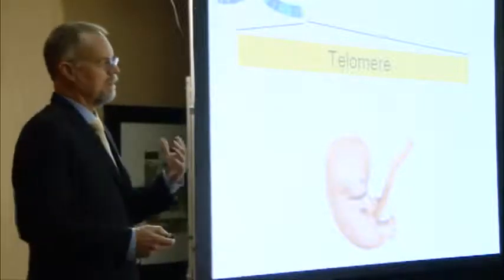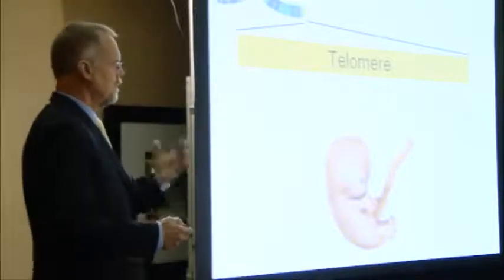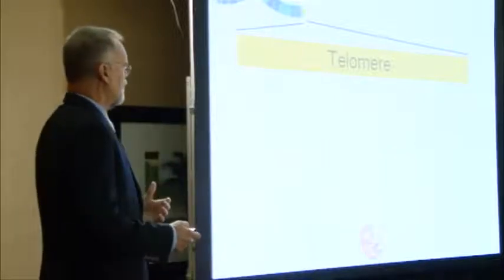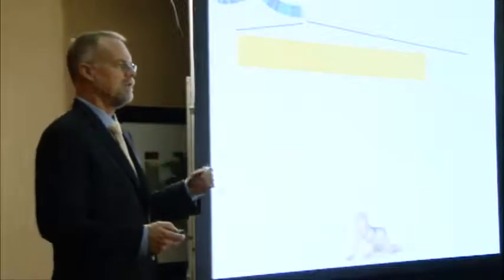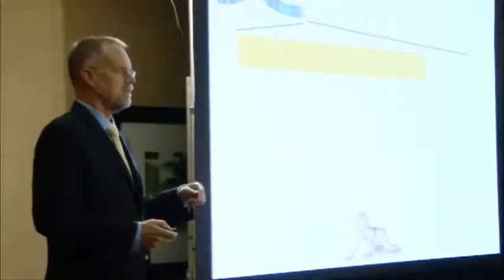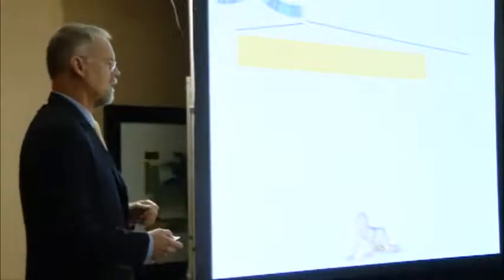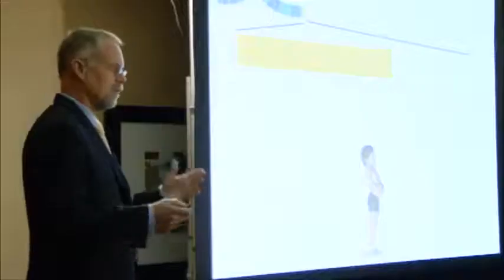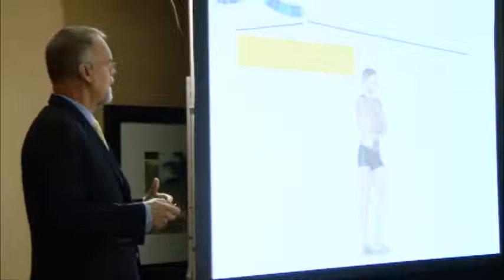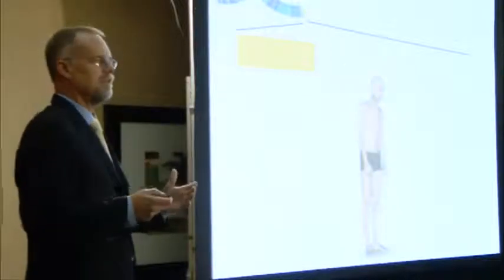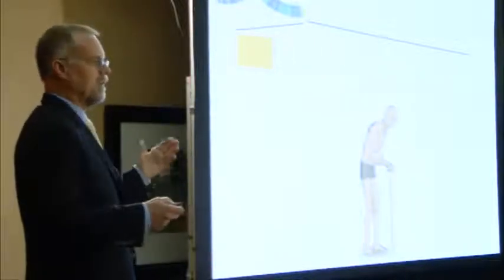That's the telomere length at least when we were first conceived. Now, after we're conceived and our cells start to divide, our telomeres start to shorten. As a result, when we become a newborn baby, our telomeres have already shortened 5,000 bases — it started at 15,000 bases and has dropped to 10,000 bases. As we continue to grow and develop into an adult, we have more cell division and our telomeres shorten even further. When the telomeres get down to about 5,000 bases, we essentially die of old age.